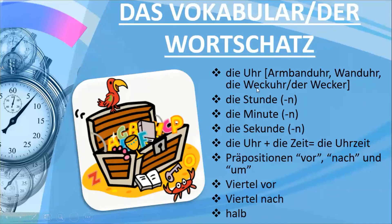Then we have 'die Uhr', which is the clock. Just like in English, we have different types of clocks in German. The watch that you wear on the wrist is called 'die Armbanduhr' in German.